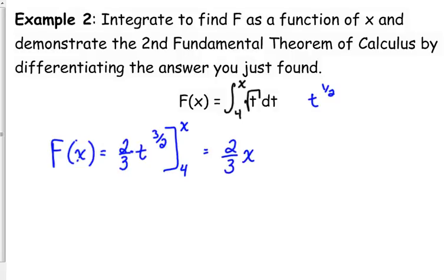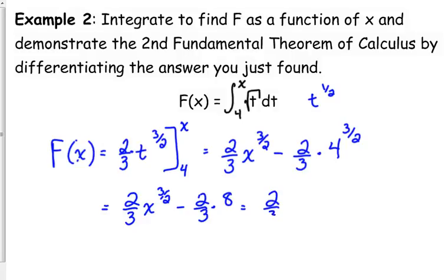So plug in x, 2/3 x to the 3/2, minus, technically we could have factored out the 2/3, 2/3 times 4 to the 3/2. Well, guess what? We just did part of this problem a second ago. So we have 2/3 x to the 3/2 minus 2/3 times 4 to the 3/2. I do the root first. The square root of 4 is 2. 2 cubed is 8. So that gives us 2/3 x to the 3/2 minus 16/3. You can factor out the 2/3 if you want to, but this is probably how the answer can work. So that is finding big F as a function of x, because big F was defined as the definite integral.